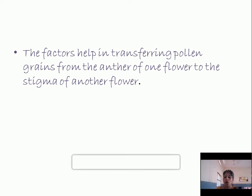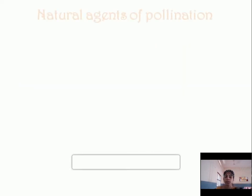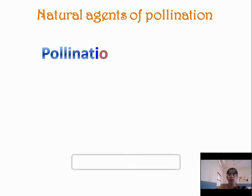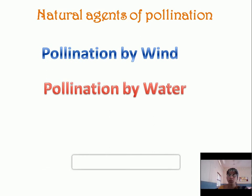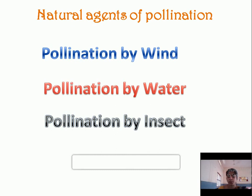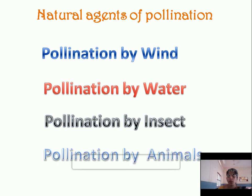The natural agents of pollination are: first, pollination by wind; second, pollination by water; third, pollination by insects; and fourth, pollination by animals. These are the natural agents of pollination. I hope all of you understood this topic. Thank you.